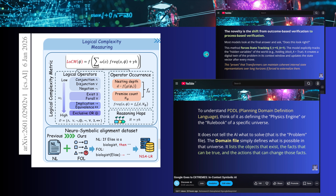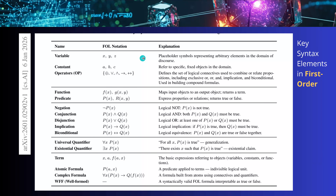You may remember my video where Google went extreme using PDDL — the Planning Domain Definition Language — integrating it into an LLM. Now, the authors decided to go with first-order logic, with its full notation: variables, constants, operators, functions, predicates, negation, conjunction, disjunction, implication, biconditional, universal quantifier, and existential quantifier — everything from first-order logic.